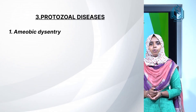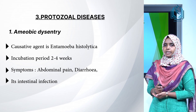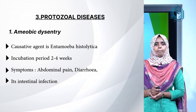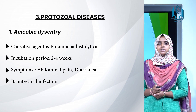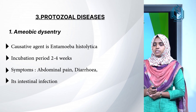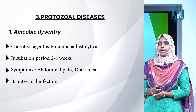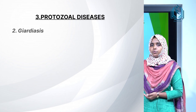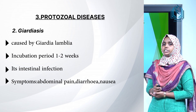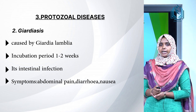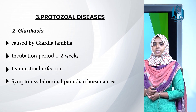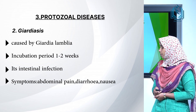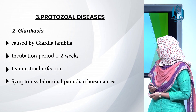Protozoal diseases include amoebic dysentery and giardiasis. Amoebic dysentery is caused by Entamoeba histolytica with an incubation period of 2 to 4 weeks. It is an intestinal infectious disease with symptoms of abdominal pain and diarrhea. Giardiasis is caused by Giardia lamblia with an incubation period of 1 to 2 weeks; it is an intestinal infection with symptoms of abdominal pain, diarrhea, and nausea.